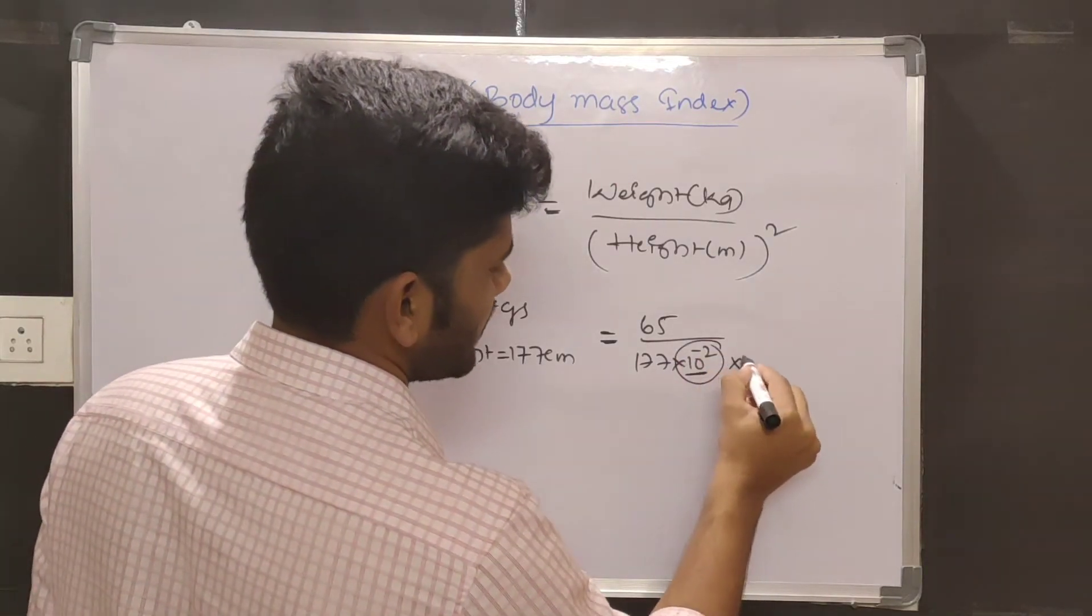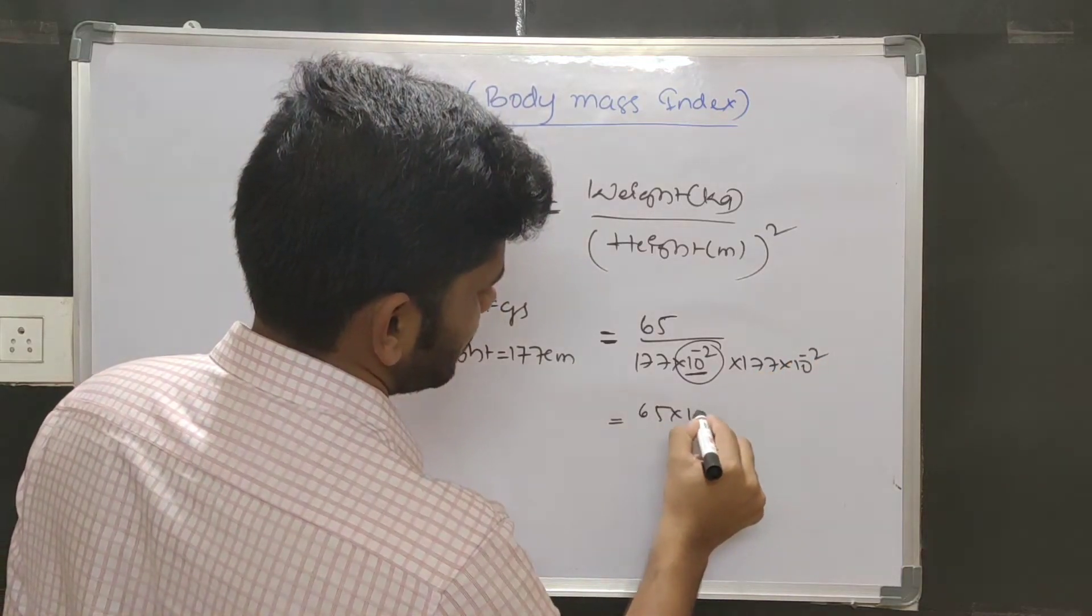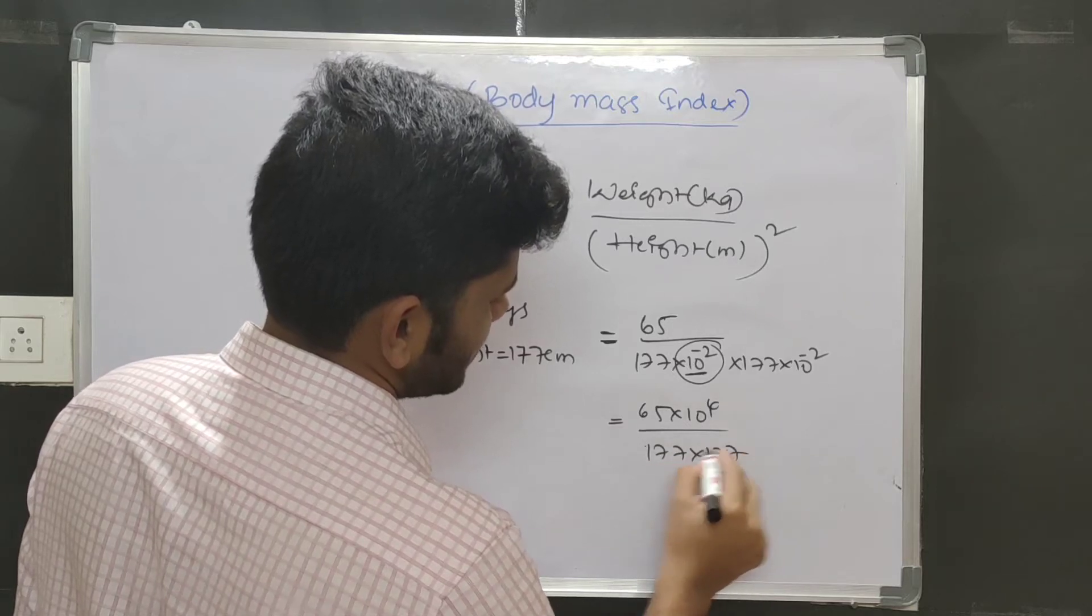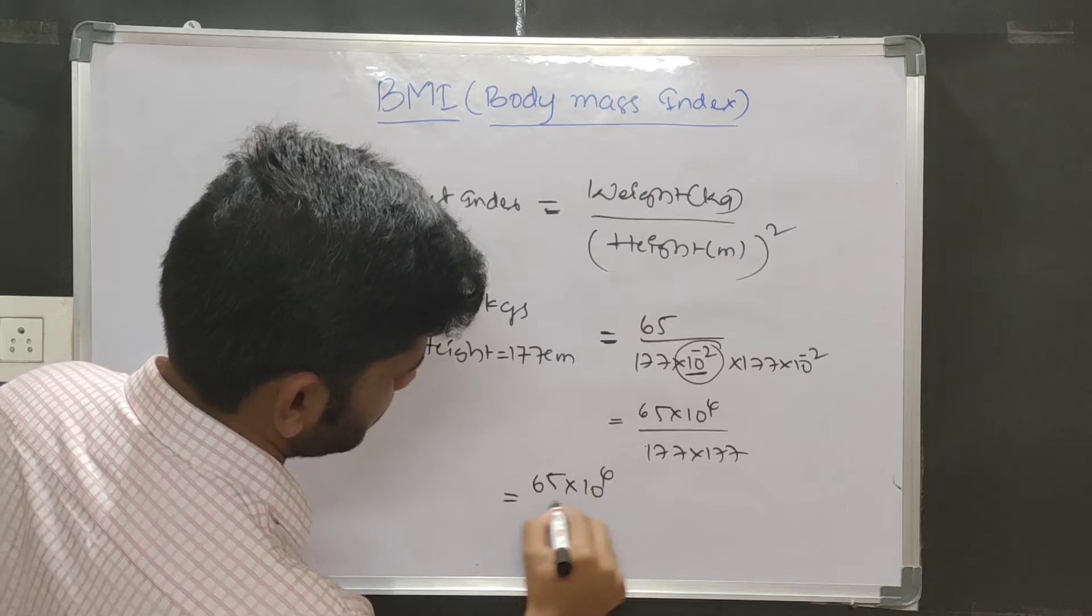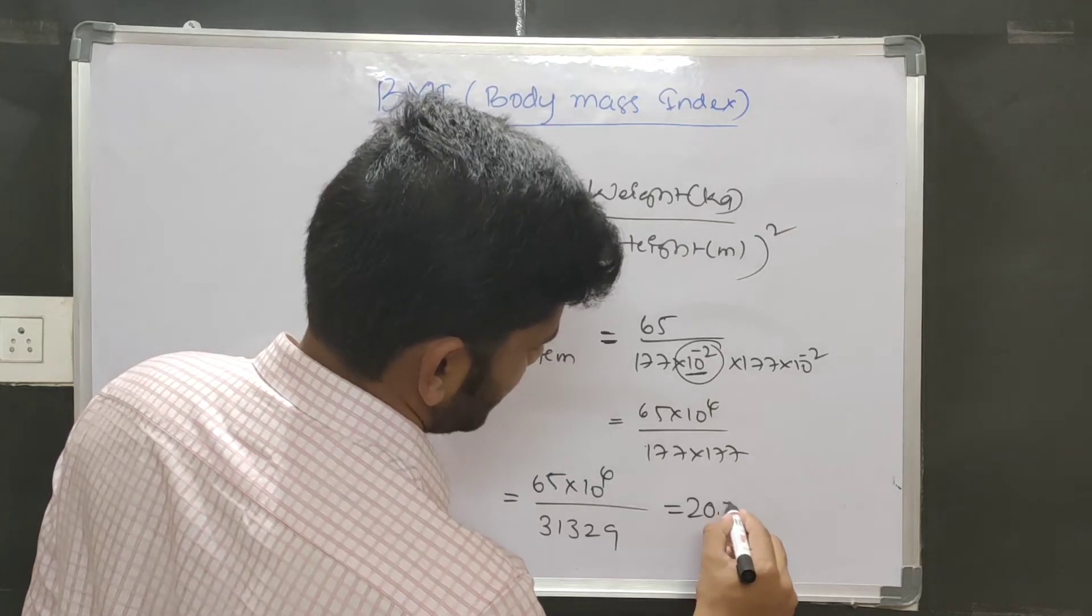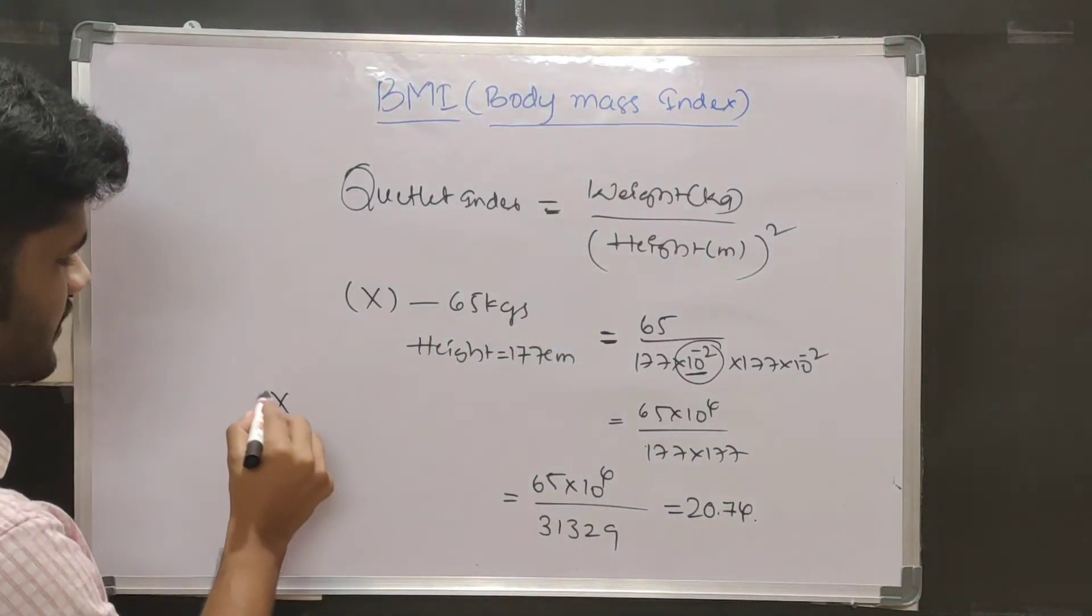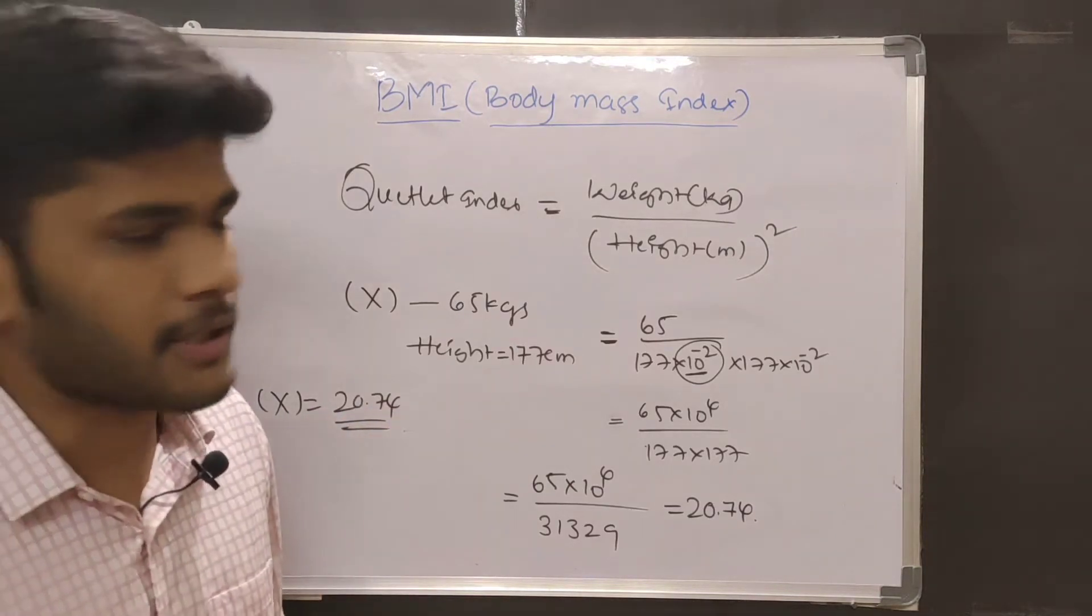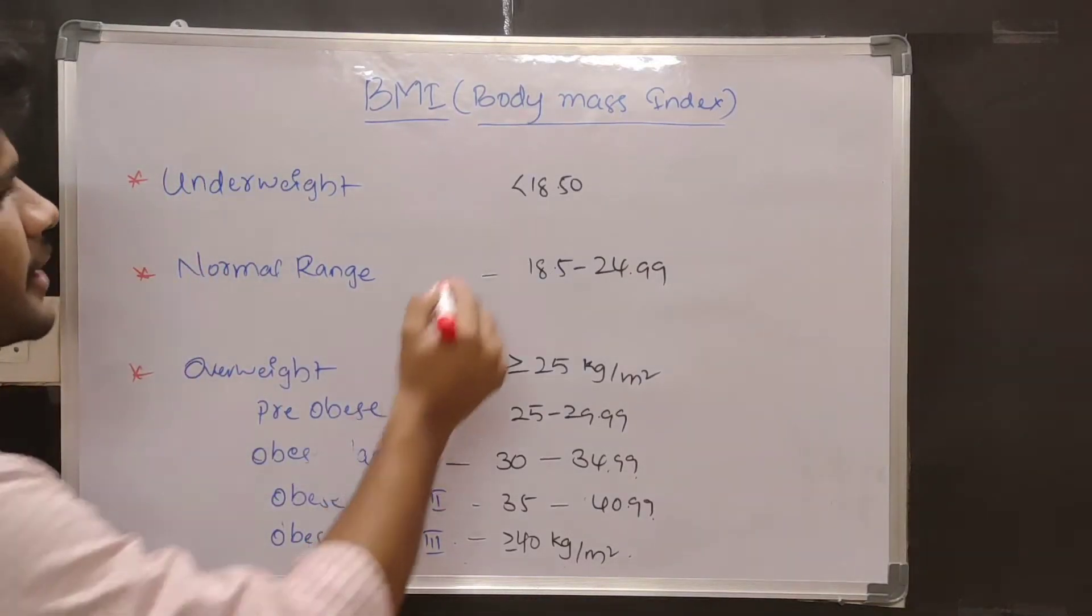And again 177 into 10 power minus 2. So 65 into 10 power 4 by 177 into 177, it is about 65 into 10 power 4 by 31329, which is about 20.74. So the BMI of person X is 20.74. This is how we calculate the BMI.